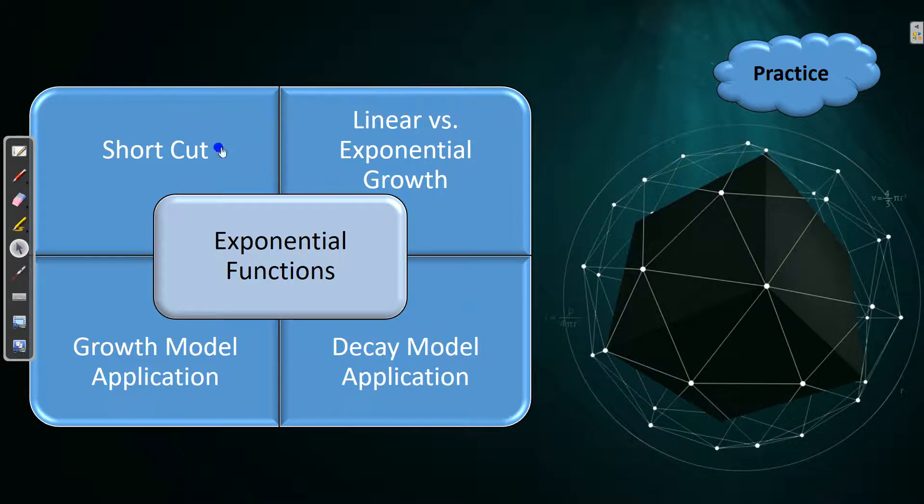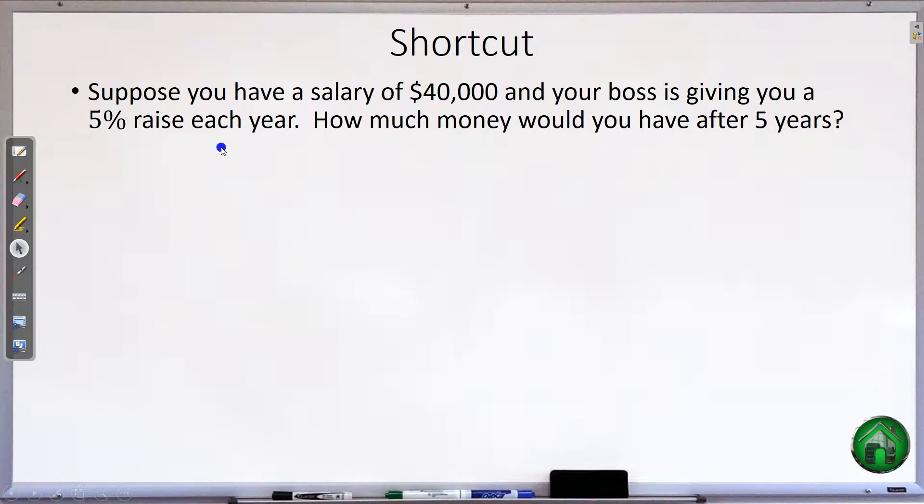So first let's make this process shorter because what we were doing last time was pretty long. So we're going to do the same problem. Suppose you start off with a $40,000 salary and you get a 5% raise each year. So how much money would we be getting after 5 years? So we're going to have a table here.